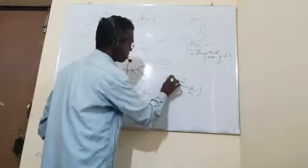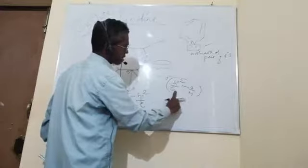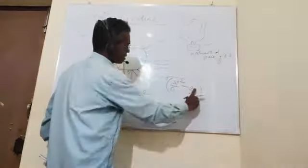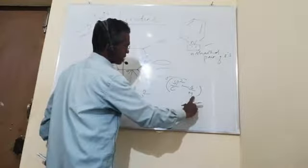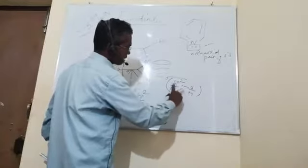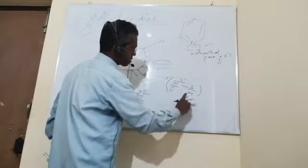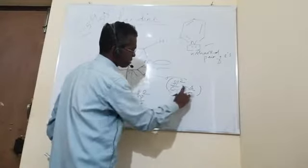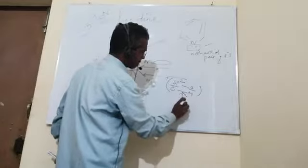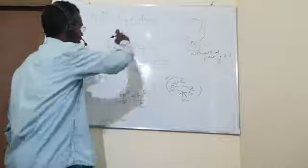The carbon-hydrogen bond is formed because of the overlap of an sp2 orbital of carbon with the s orbital of hydrogen. The one s orbital of hydrogen overlaps with one of the sp2 orbitals of carbon, forming a sigma bond between carbon and hydrogen.